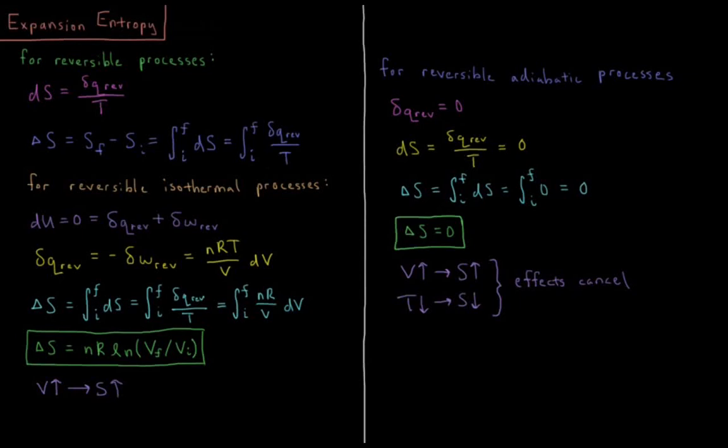This video will discuss the entropy that occurs during an expansion or compression of an ideal gas. We looked at in the previous video for reversible processes, we defined a quantity called the entropy, where the change in the entropy, dS, is equal to the reversible heat divided by the temperature. So for some tiny change in the system, dS equals dQ_rev over T.